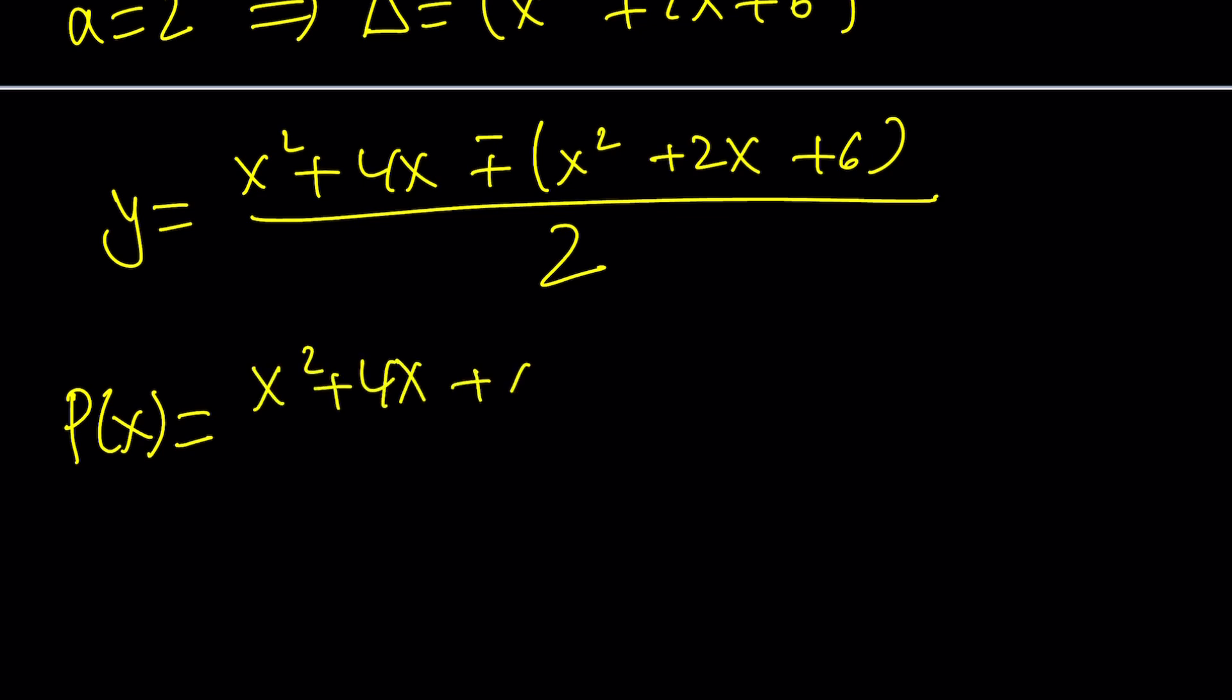x² + 4x + x² + 2x + 6, divide it by 2. That'll give me 2x² divided by 2, that'll be x². This is 6x, which is going to give me 3x. And 6, half of 6 is just going to be 3. So that is P(x).